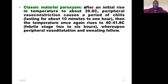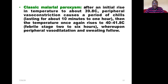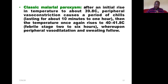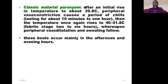When you have an initial rise in temperature to about 39.8 degrees, there is peripheral vasoconstriction and the patient feels chilled — a period of chills lasting about 10 minutes to one hour. The temperature then rises to 40 or 41 degrees, and this febrile stage lasts two to six hours, followed by peripheral vasodilation, sweating, and decreasing temperature. Depending on the species, the cycle repeats every 48 or 72 hours, mainly in the afternoon and evening.